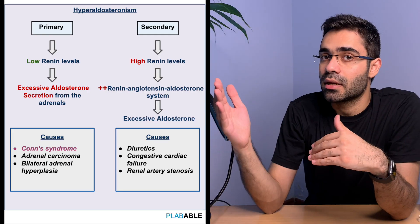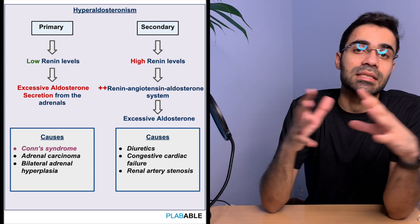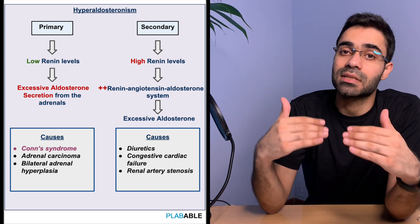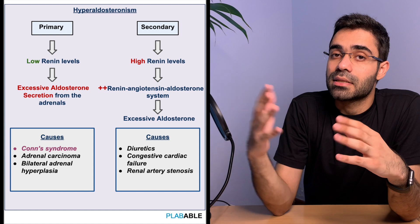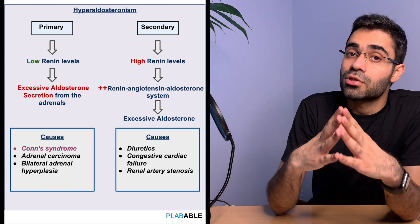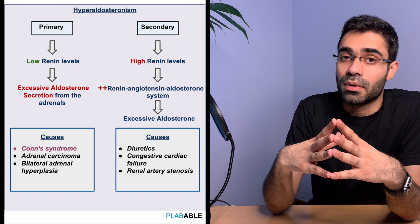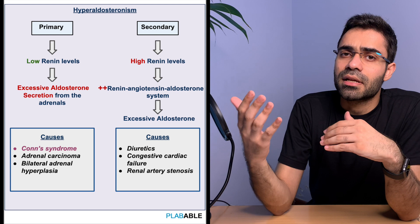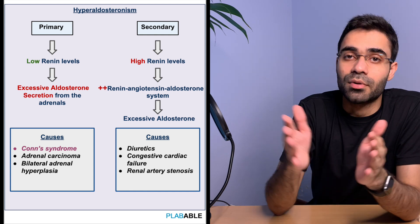Hyperaldosteronism can be divided into primary and secondary. Primary is when there is excessive release of aldosterone from the adrenal glands. The most common cause is an aldosterone-secreting tumor of the zona glomerulosa, commonly known as Conn's syndrome, which comprises more than 80% of primary hyperaldosteronism cases. Other conditions like adrenal carcinoma or bilateral adrenal hyperplasia also result in primary hyperaldosteronism.